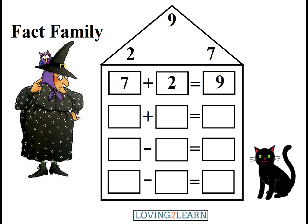Let's try another one. This time, we'll put 2 plus 7 equals what? 9! Excellent job! We can say 2 and count on by 7: 2, 3, 4, 5, 6, 7, 8, 9. Or, we know 2 plus 7 equals 9.